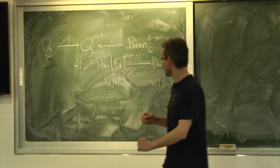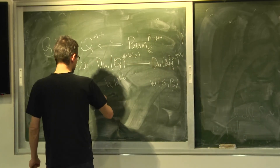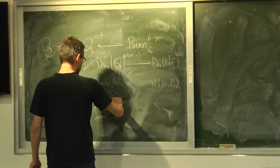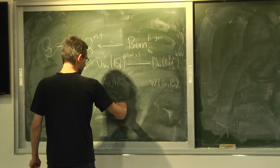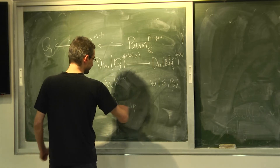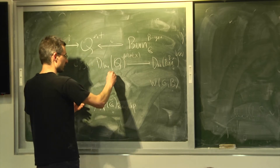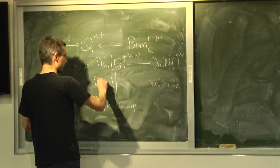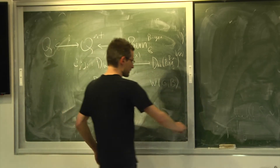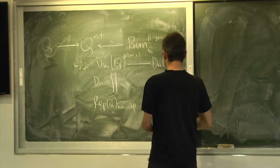So let me recap who the categories were. This is — again, this is Dario's talk. So this is rep G-check, running in depth. And now this here comes from Sam's talk.